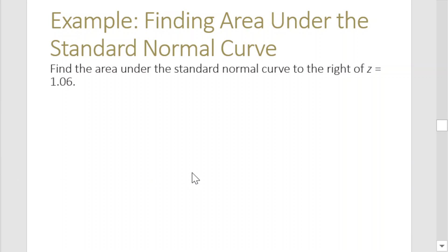So we have here: find the area under standard normal curve to the right of z equals 1.06. Again, we would have to draw our normal curve.